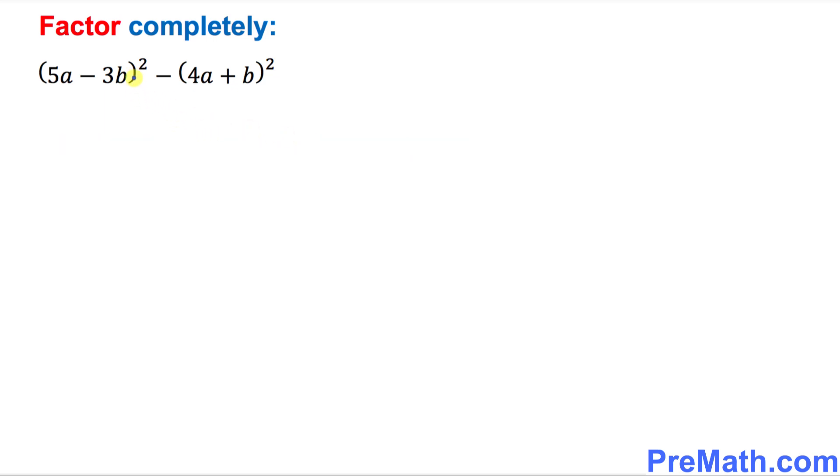So let's go ahead and get started factoring this given polynomial. As you can see, this polynomial represents a difference of two squares. So that's why we are going to use this formula: x squared minus y squared. The difference of two squares is the product of sum and difference.